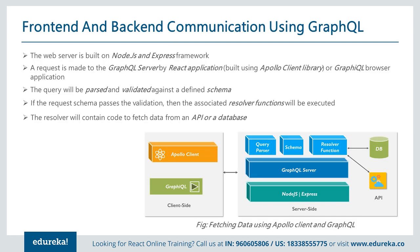How do front-end and back-end communicate? The web server is built in Node.js and Express framework. A React application makes requests to the GraphQL server using Apollo Client. The client that helps consume GraphQL is called Apollo or the GraphQL browser application. The query is validated against a schema; if validation passes, the associated resolver function executes and fetches data from an API or database.